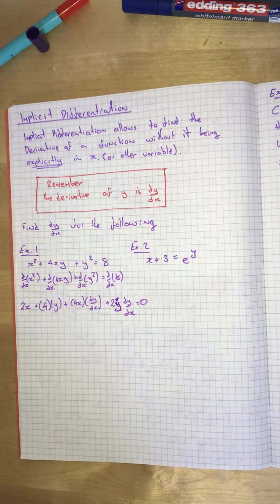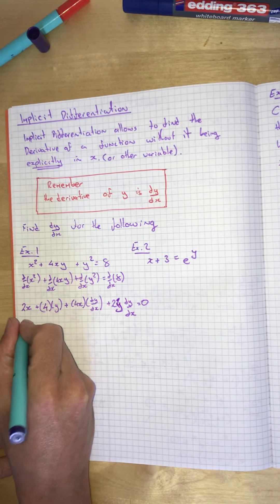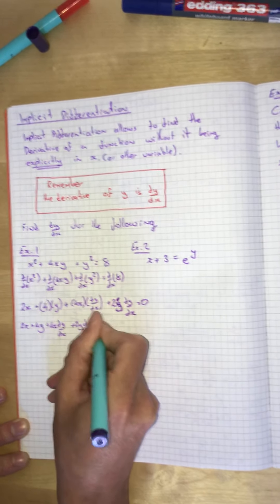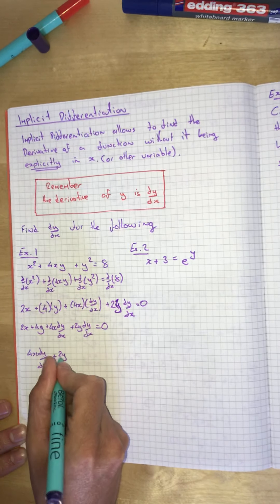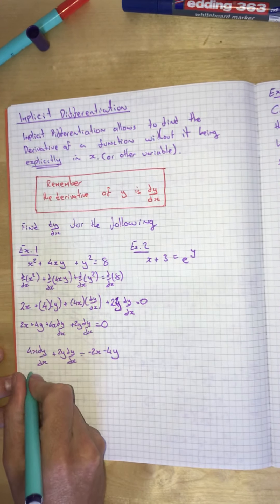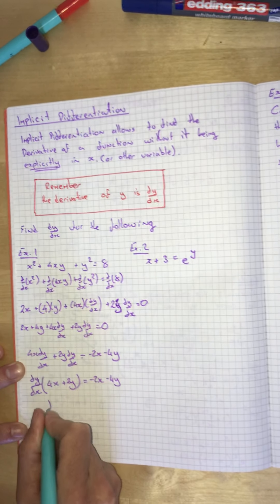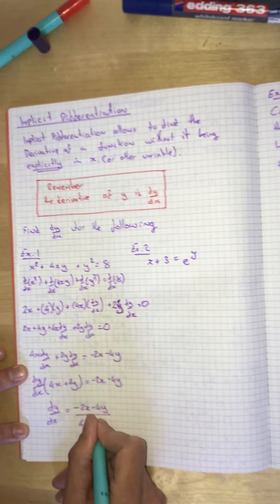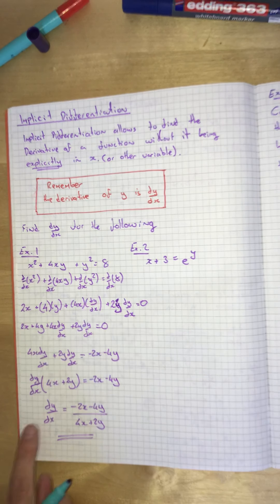We have now differentiated it, but it's not very neat. I want to rearrange this for dy/dx and make it in that form. So let's simplify: 2x plus 4y plus 4x dy/dx plus 2y dy/dx equals 0. We're going to take everything over that's not got dy/dx, so: 4x dy/dx plus 2y dy/dx equals negative 2x minus 4y. To get just one dy/dx, we take out a common factor of dy/dx, leaving (4x + 2y), all equal to negative 2x minus 4y. Then divide through, so dy/dx equals (negative 2x minus 4y) all over (4x plus 2y). We've differentiated implicitly and rearranged to get it in the form dy/dx equals something.